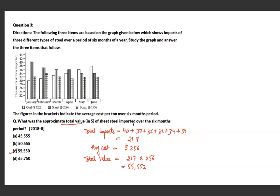The second question on the same graph asks for the approximate total value of sheet steel imported over all six months. The average cost per unit is given in brackets as 256. Multiply total quantity by average cost to get the answer — option C.